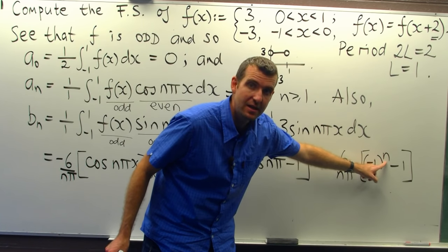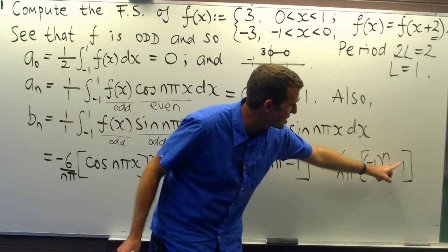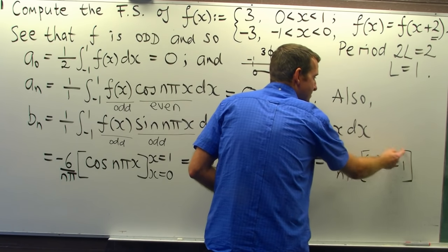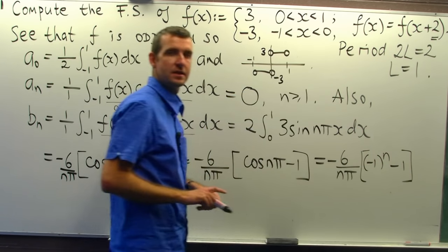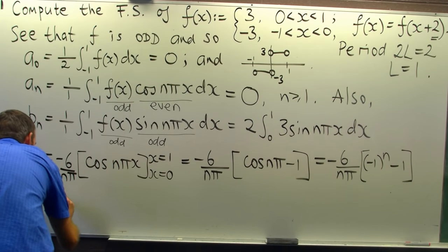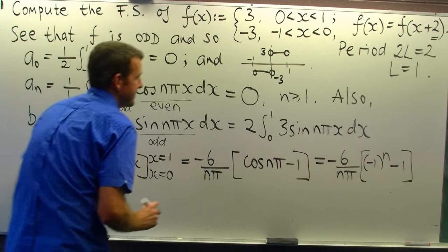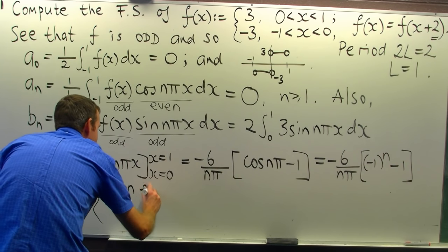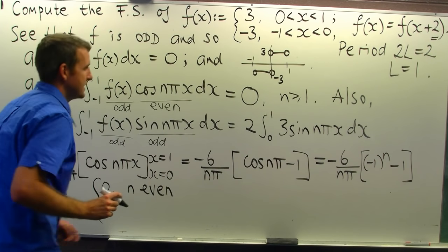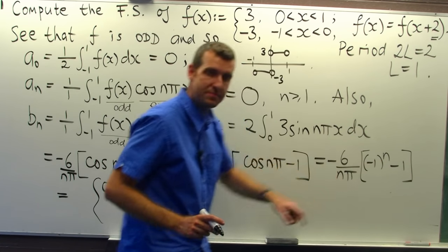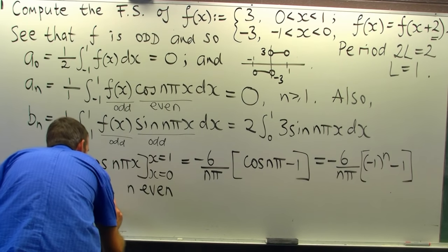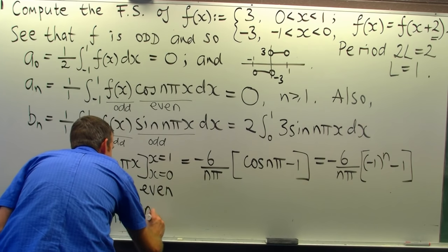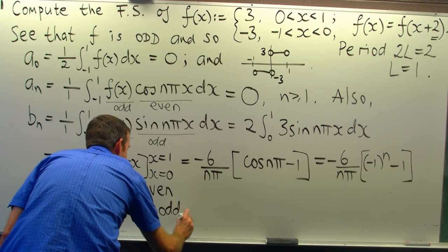If n is even, this is going to be 1 minus 1, so it's 0. If n is odd, then this is going to be minus 1 minus 1. So we can go a little bit further and it's going to be this: 0 for n even. Then, if n is odd, we get minus 2 here. Minus 2 times minus 6 on n pi. 12 on n pi when n is odd.